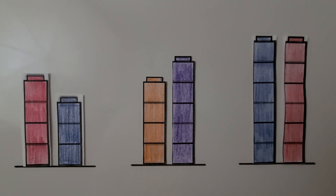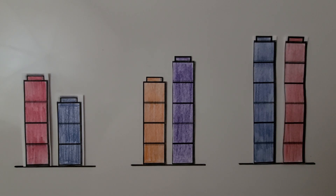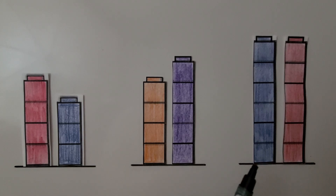Here we have three sets of cube towers — a set here, a set here, and a set here. When cube towers are the same height, they will have the same number of cubes and they will end in the same place. We need to circle the set of cube towers that are about the same height.